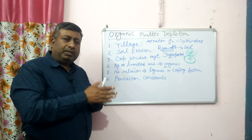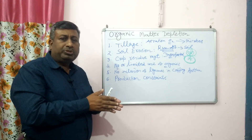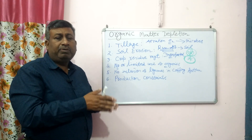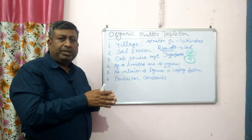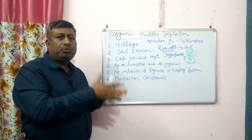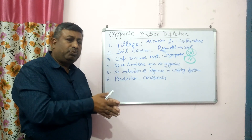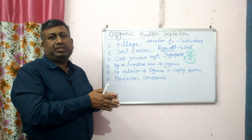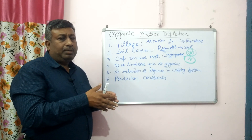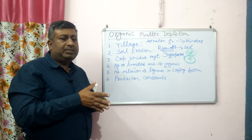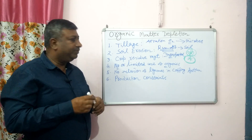We should use vermicompost, compost, green manure, bio-fertilizers, and crop residue as organic matter — whatever organic material we can get, we should use it. If we rely totally on chemical fertilizers, definitely the organic matter content will decrease.